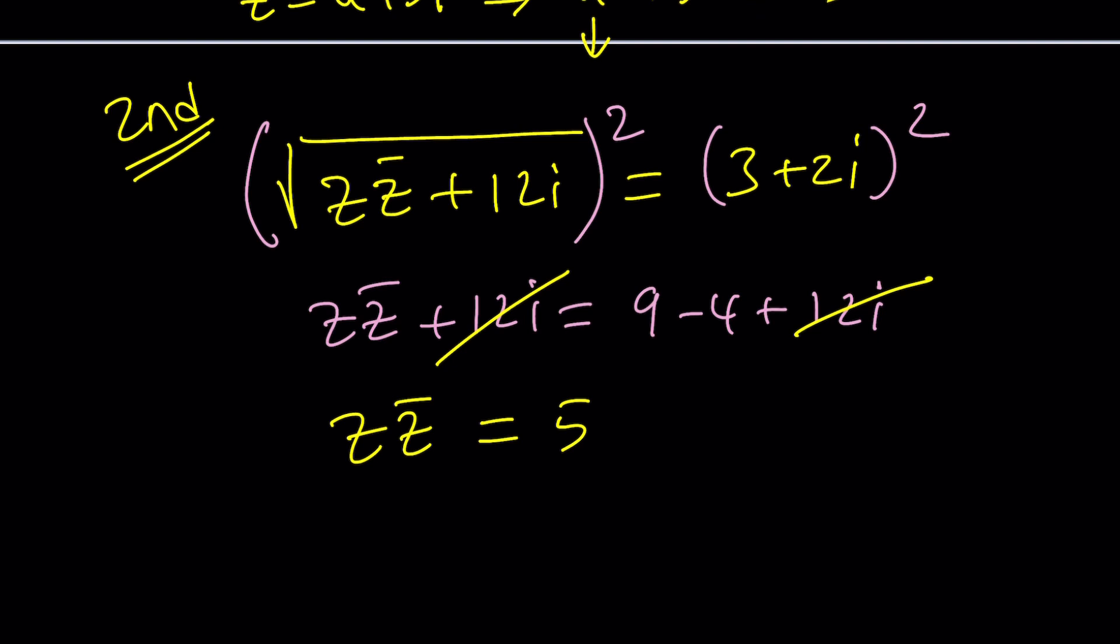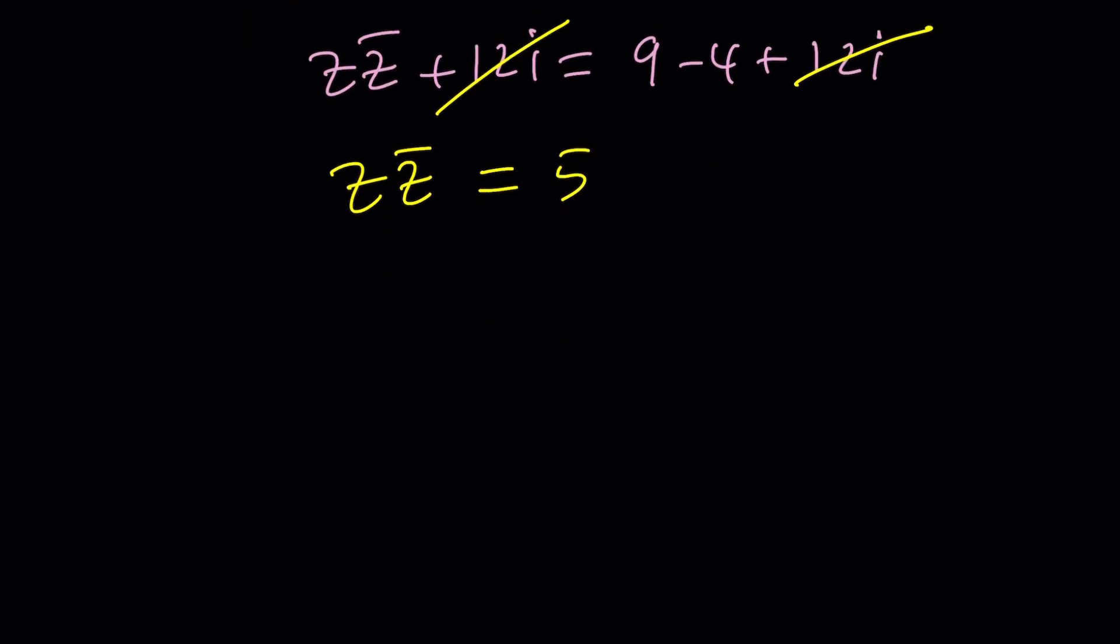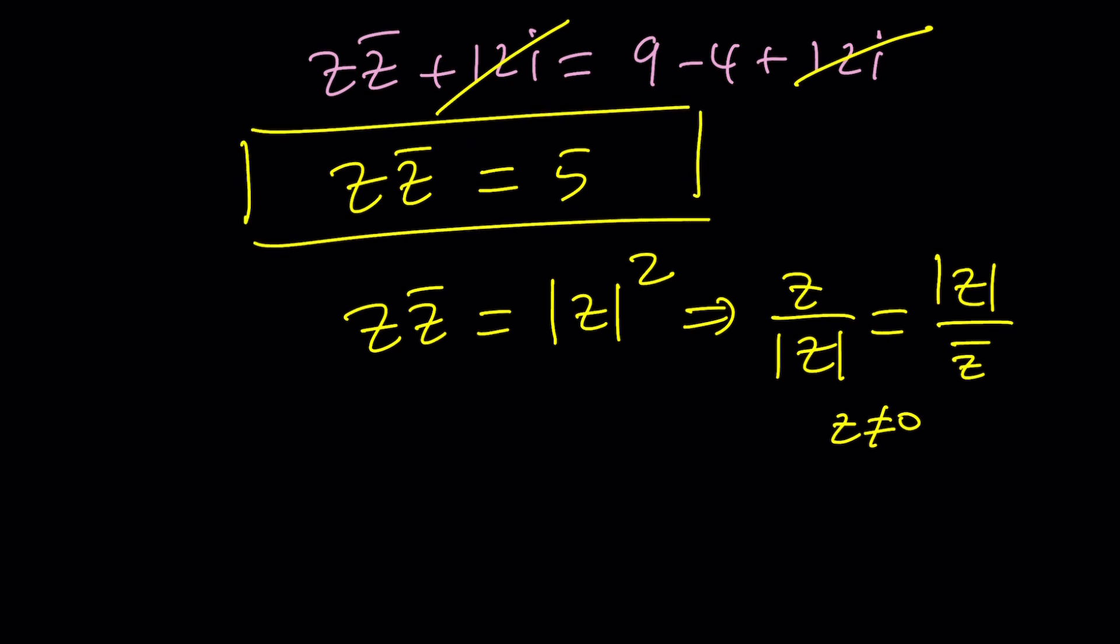Now how do you find an equation that satisfies this? If you know this identity it's going to be easier: z times z bar is absolute value of z squared. This identity can be written in different ways. For example I can write it as z over absolute value of z equals absolute value of z over z bar. The only problem with this is z cannot be zero but here z can be zero which is trivial but we know that our z is not zero.